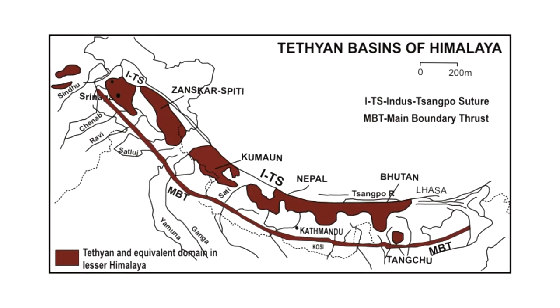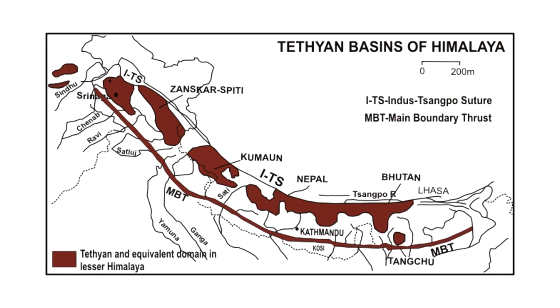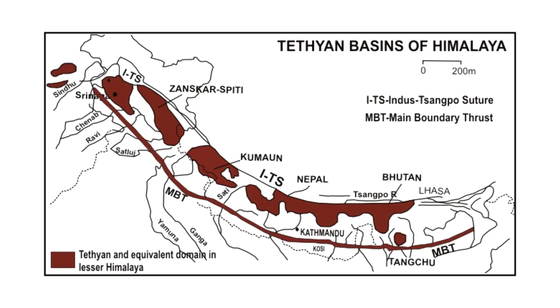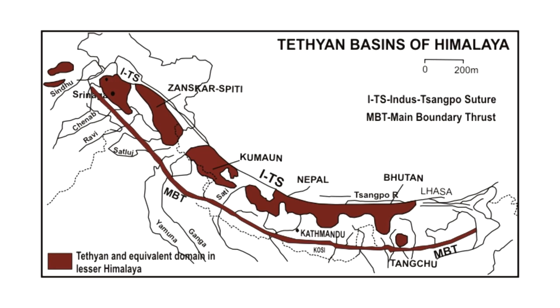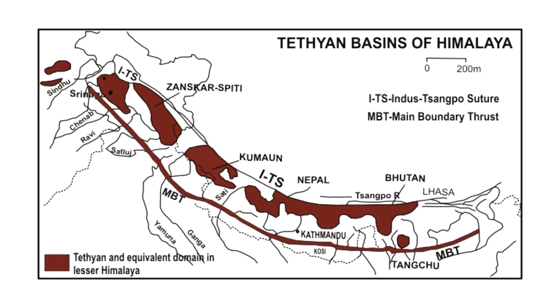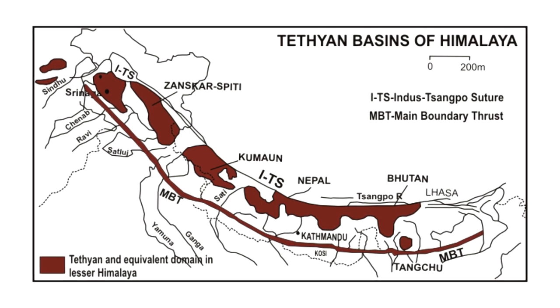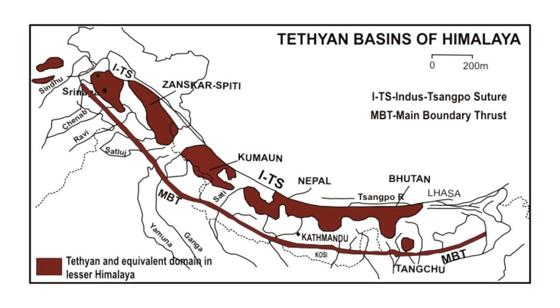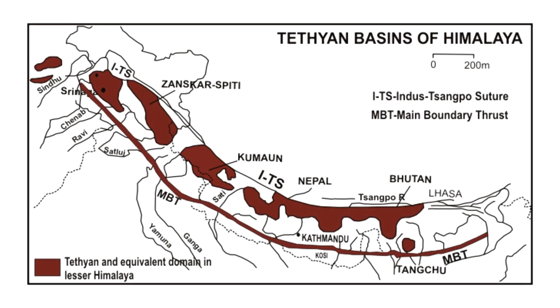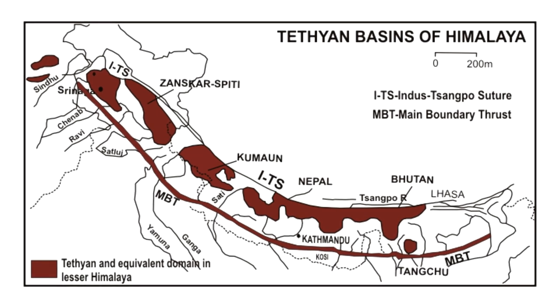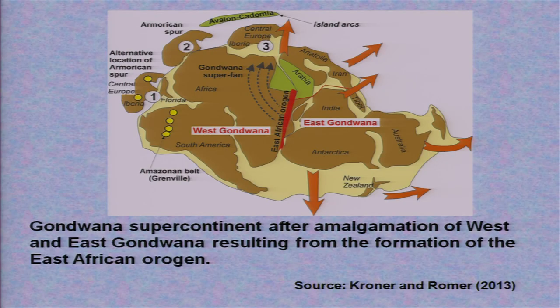You have Tethyan basins in Kashmir, Punjab, Uttarakhand, and Himachal Pradesh, and if you see in the east, you have them in Sikkim and Bhutan. Into these Tethyan basins, Eocene sediments were deposited. The formation of Gondwana land is very clearly shown in this map.